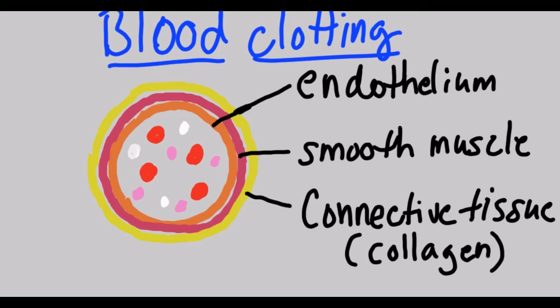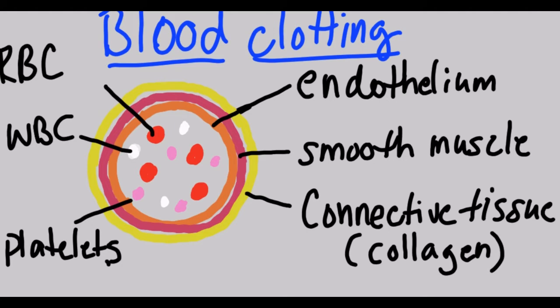If we look inside the blood vessel, floating around in the blood itself, there are going to be red blood cells, white blood cells, and platelets.